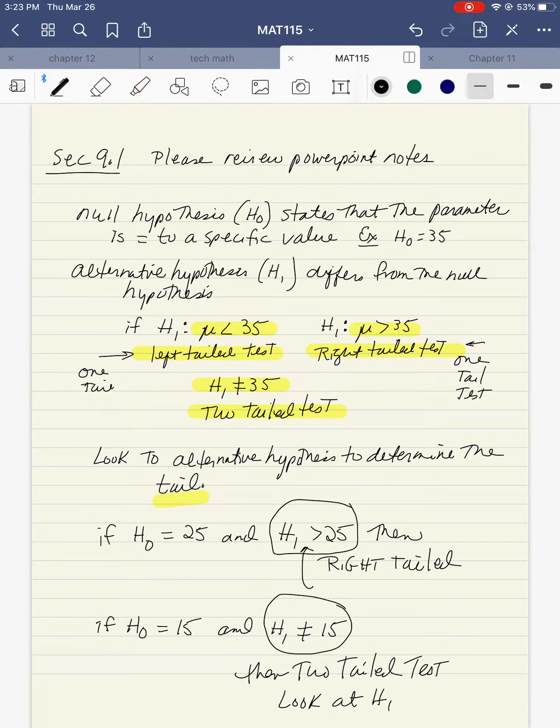So if H0 is 25 and H1 is greater than 25, because this is greater than, that means it's a right-tailed test. If H0 is 15 and H1 does not equal 15, because it's not equal, this means it's a two-tailed test.